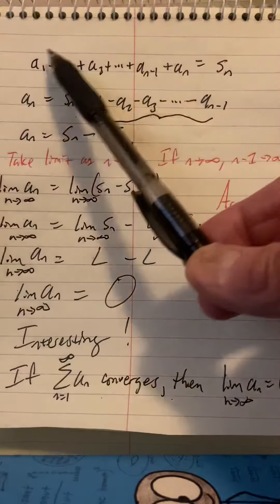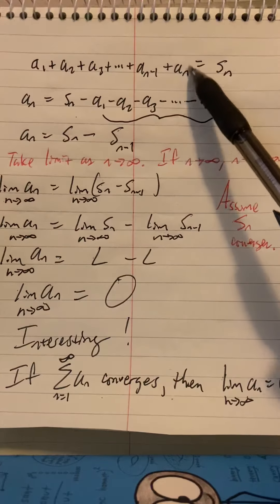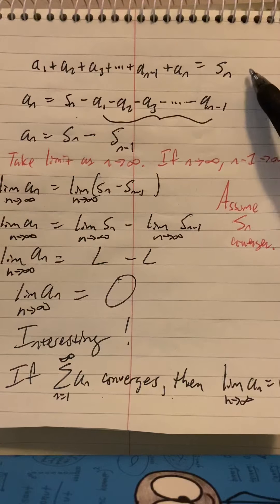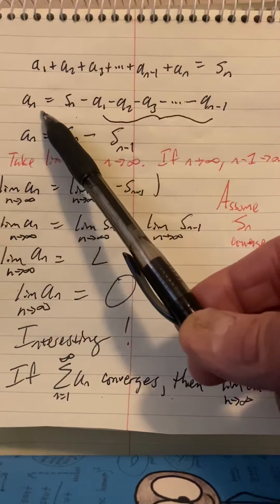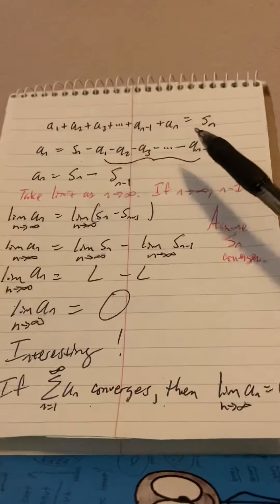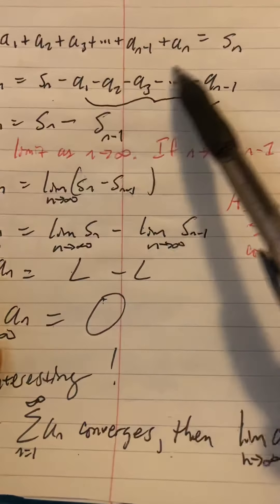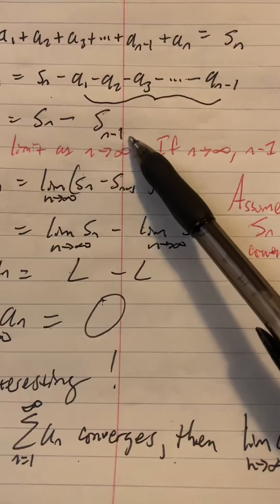Now what we're going to do is subtract all of these terms, all except for the last one, from s sub n. So we subtract them all over and we have a sub n by itself. And then we look right here and we realize this is s sub n stopping at n minus 1.